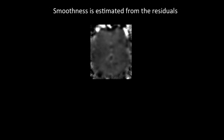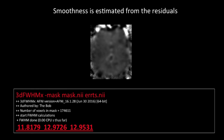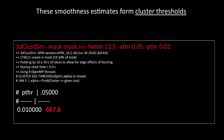Smoothness is estimated from the residuals because we want to know how often we would see a cluster of a certain size just based on random chance from noise alone. For example, if you give 3dFWHMx in AFNI your error time series — everything left over after you've estimated a model — you get estimates of the smoothness parameters in the x, y, and z directions. These can then be fed into 3dClustSim to form cluster thresholds.